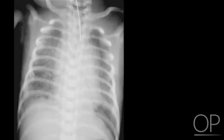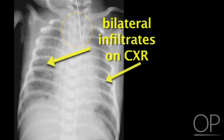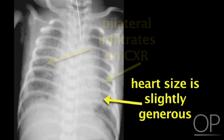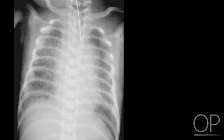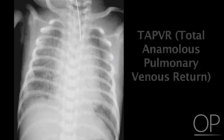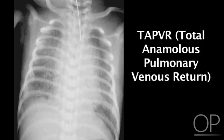Here's an important differential diagnosis in the newborn. This newborn presented with hypoxia and respiratory distress. Looking at the chest X-ray, the patient is intubated and has bilateral infiltrates, and the heart looks slightly generous. The patient actually does not have neonatal respiratory distress syndrome — the patient has TAPVR, total anomalous pulmonary venous return. It's a cardiac condition that looks like ARDS or respiratory distress syndrome of the neonate, but it's important to exclude that with an echo.